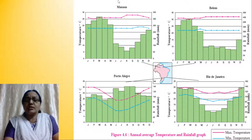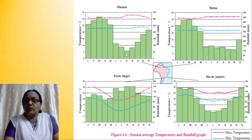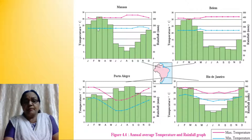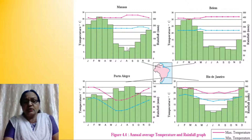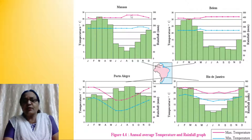First you are going to study the graph. Manaus receives the lowest rainfall in the month of August, and the highest rainfall is received in the month of March. The minimum temperature is recorded over four to five months — January, February, March, April, May. Then June, July, August, September. In the month of August, Manaus experiences a very high temperature.